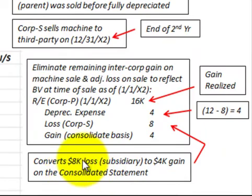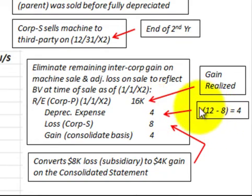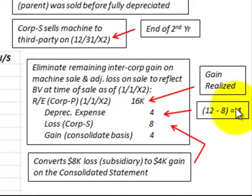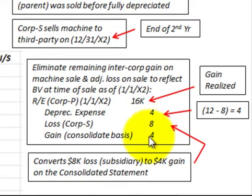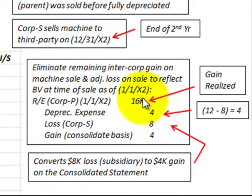Next, we convert the $8,000 loss by the subsidiary to the $4,000 consolidated gain. We credit depreciation expense for $4,000 — the difference between $12,000 and the consolidated basis of $8,000. We also credit the $8,000 loss recorded by the subsidiary corporation and credit the $4,000 consolidated gain. These credits — depreciation expense reduction, the subsidiary's loss, and the consolidated gain — balance against the retained earnings debit, converting the $8,000 subsidiary loss to a $4,000 consolidated gain.